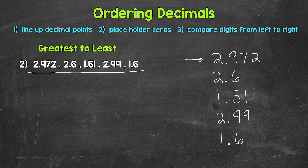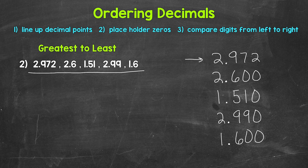For two and six tenths, we need two placeholder zeros. For one and fifty-one hundredths, we need one placeholder zero. For two and ninety-nine hundredths, we need one placeholder zero. And for one and six tenths, we need two placeholder zeros. Now this looks a little more lined up and neater, and this will help us order.